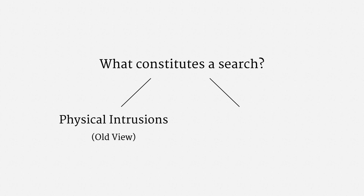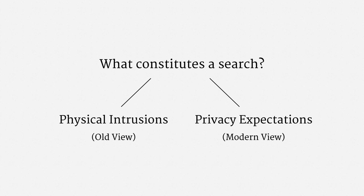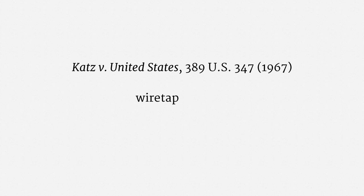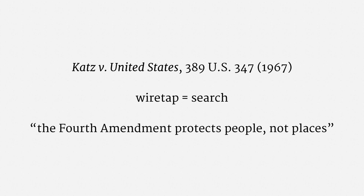The modern view is that the Fourth Amendment protects privacy expectations. Those expectations can cover physical objects, but they also can cover intangibles. In the seminal 1967 case of Katz v. United States, the Supreme Court held that a telephone wiretap can be a search. It expressly overturned the Olmstead ruling. Famously, the Court held that the Fourth Amendment protects people, not places — in other words, it's about privacy expectations, not just physical intrusions.